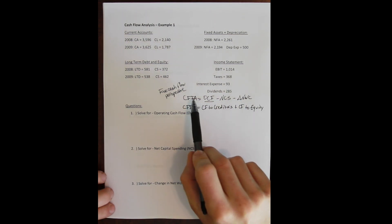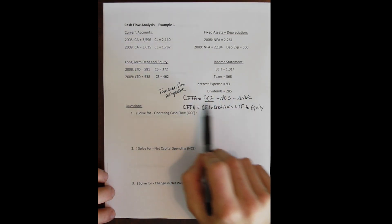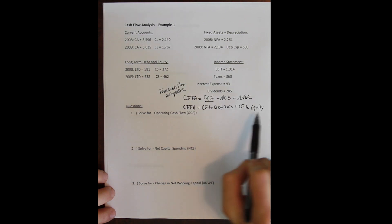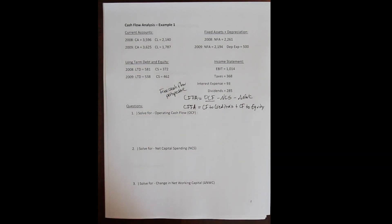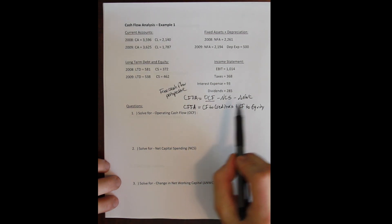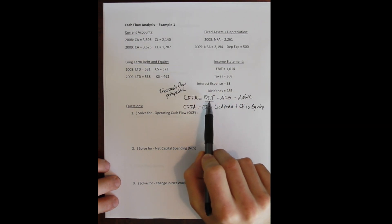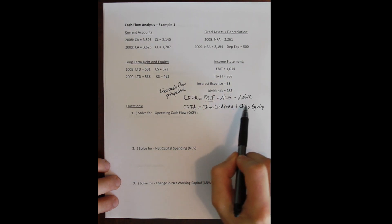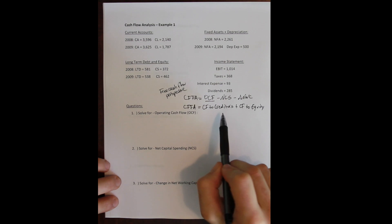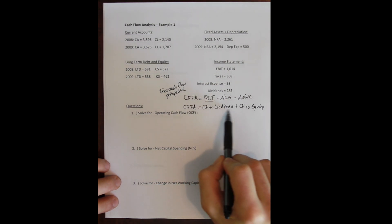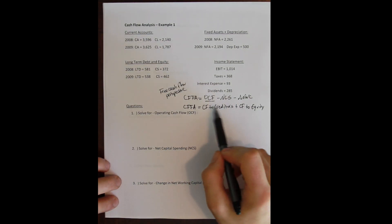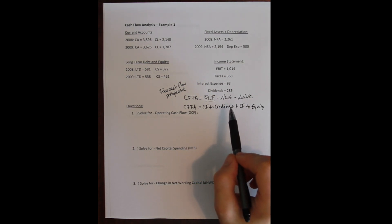If cash flow from assets is positive, the firm is generating extra cash that goes back to paying off loans and to equity holders. If it's negative, the firm has investments or operating expenses greater than its operating revenue, meaning additional money must come in from outside — either a new loan or by selling more shares. This is commonly negative for young, growing firms raising external capital.